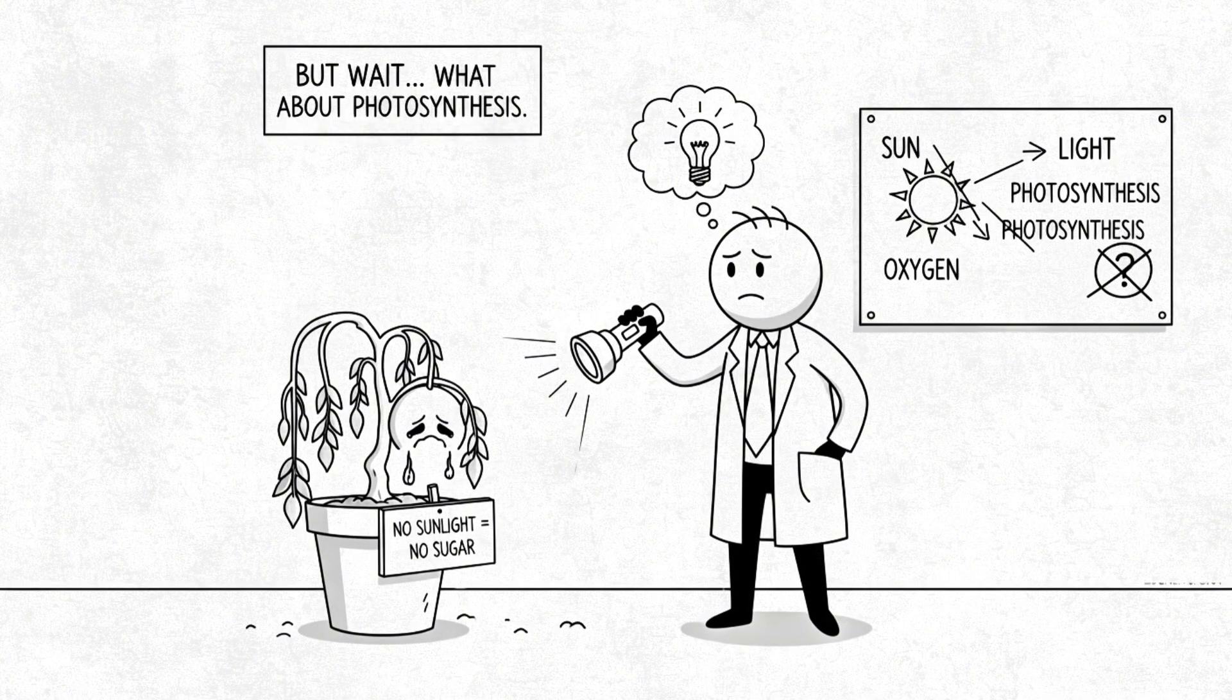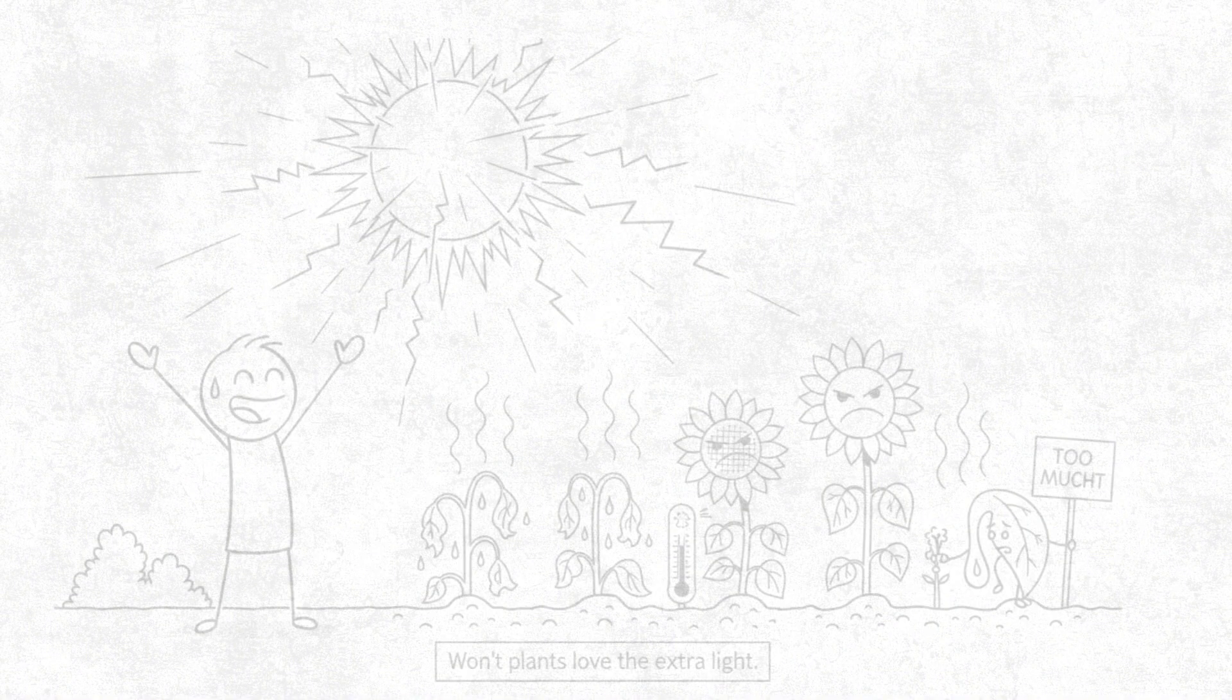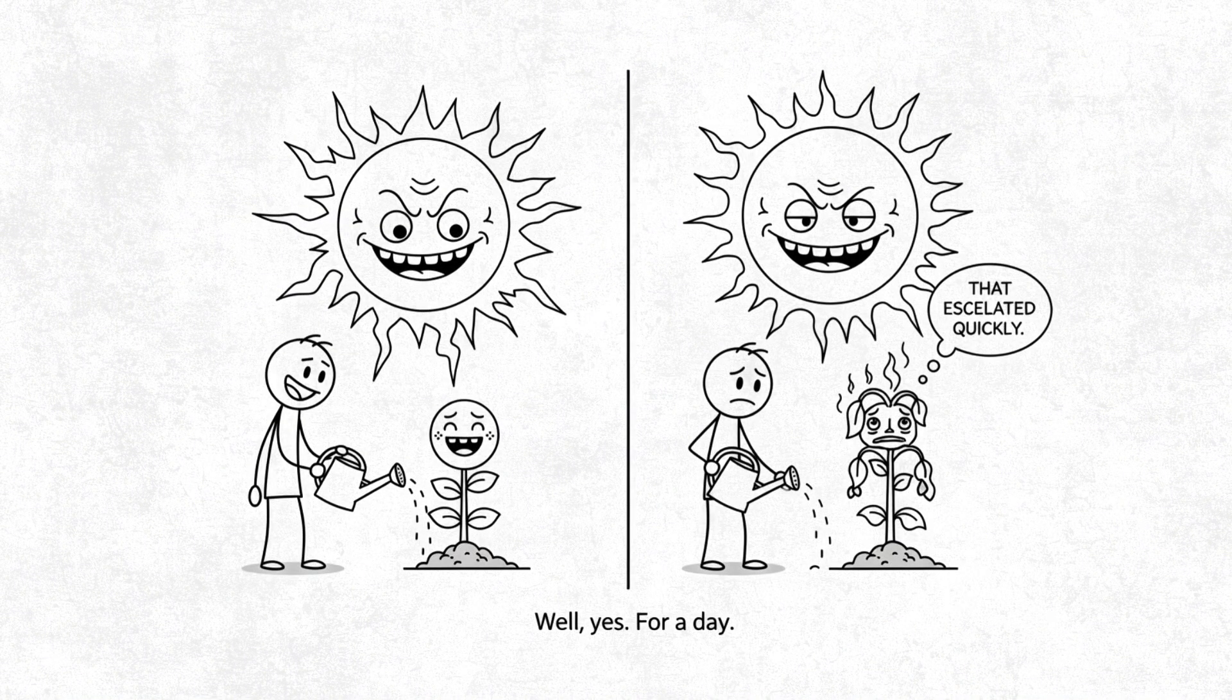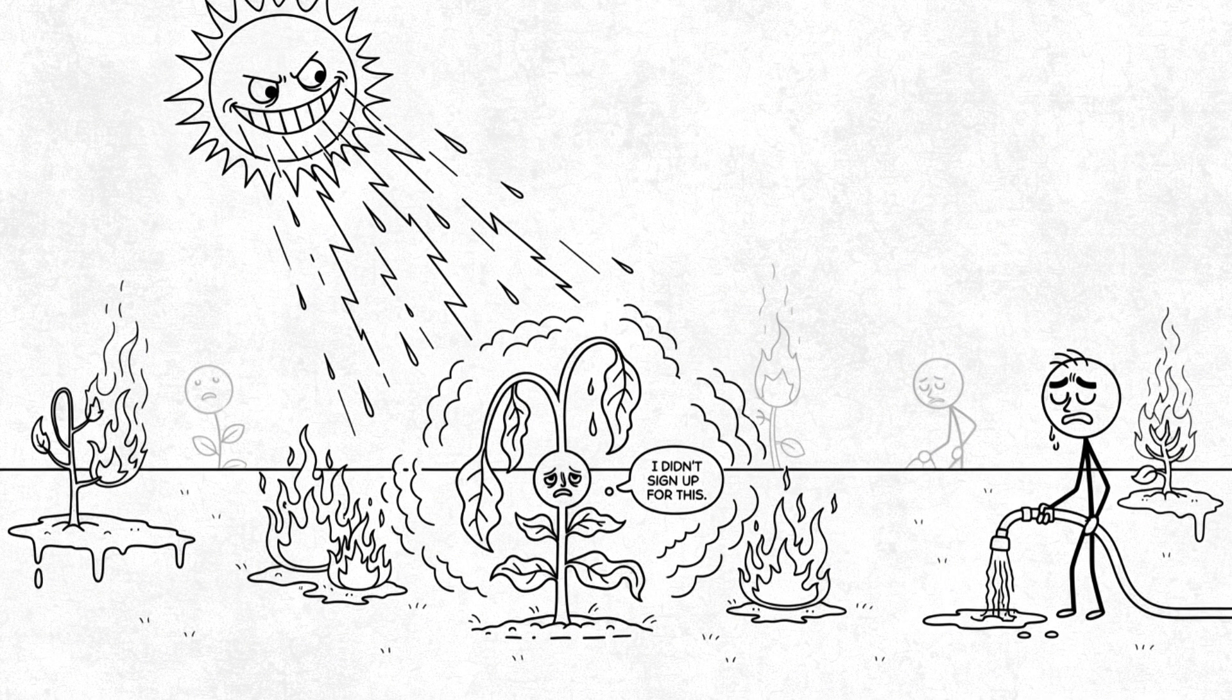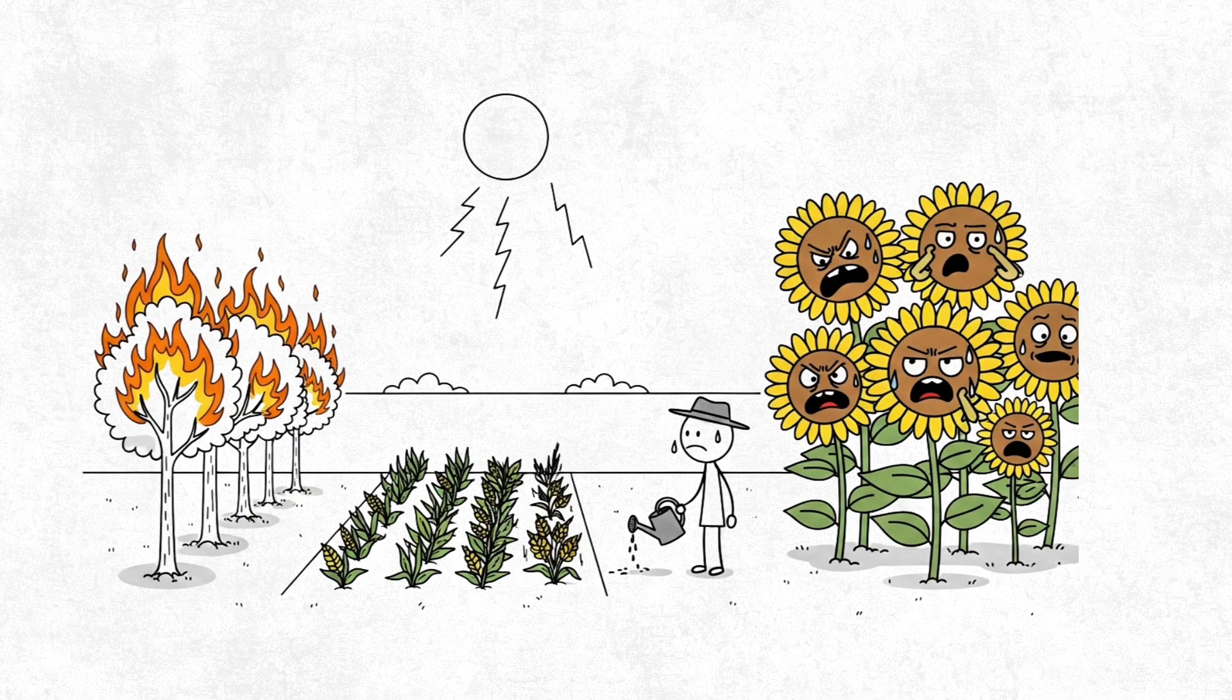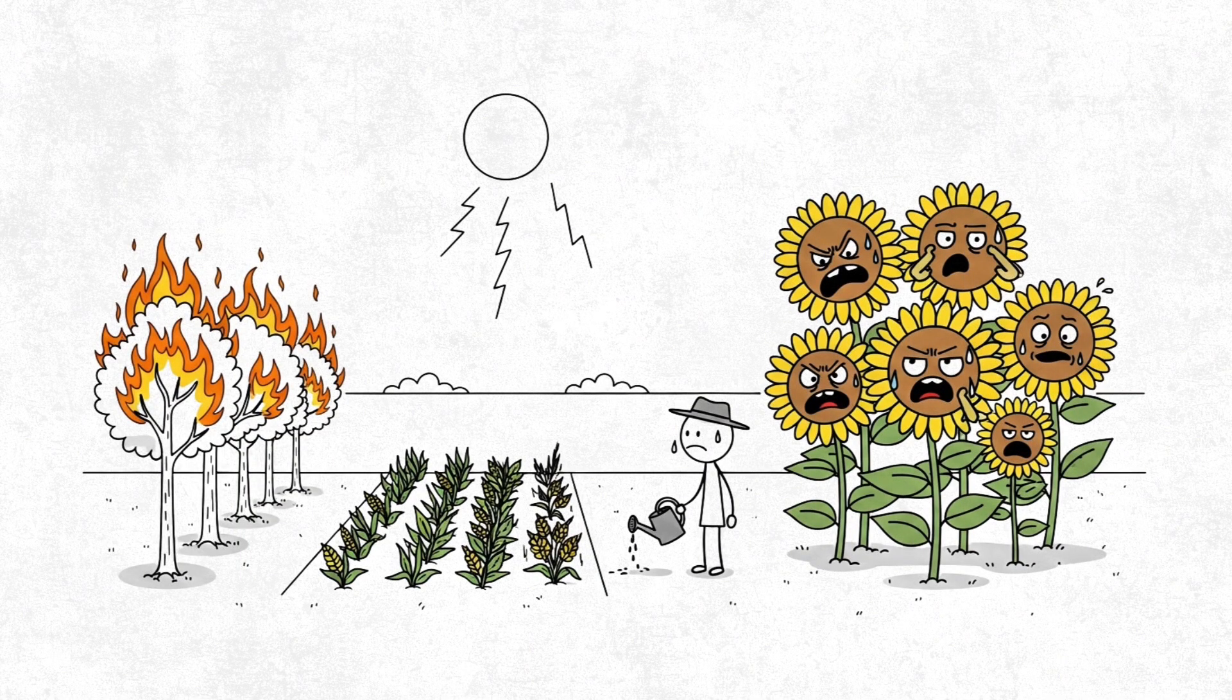But wait, you ask. What about photosynthesis? Won't plants love the extra light? Well, yes, for a day. Then, the heat stress, UV damage, and wildfires make chlorophyll reconsider its life choices. Trees combust. Crops fail. Sunflowers turn away out of sheer protest.